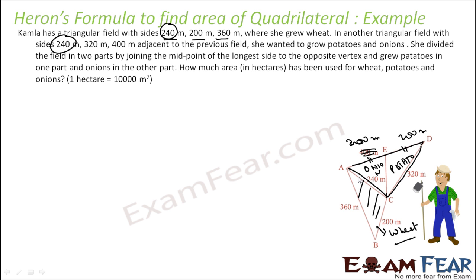In all the remaining parts of the fields, she grew wheat. Now we have to find how much area is used for potato and onion. The sides of the triangles are known.